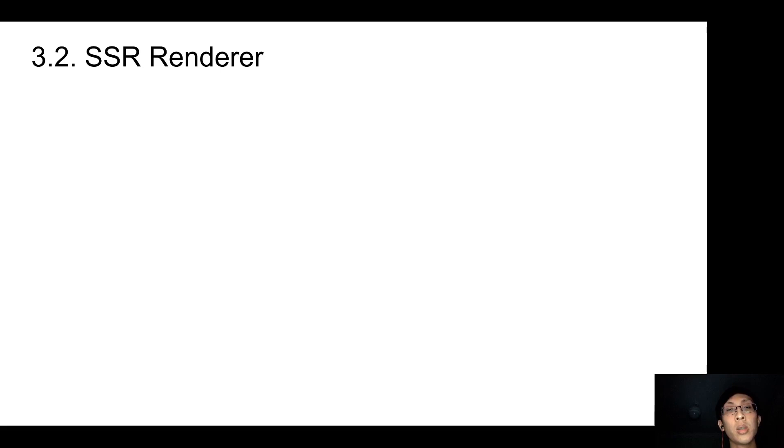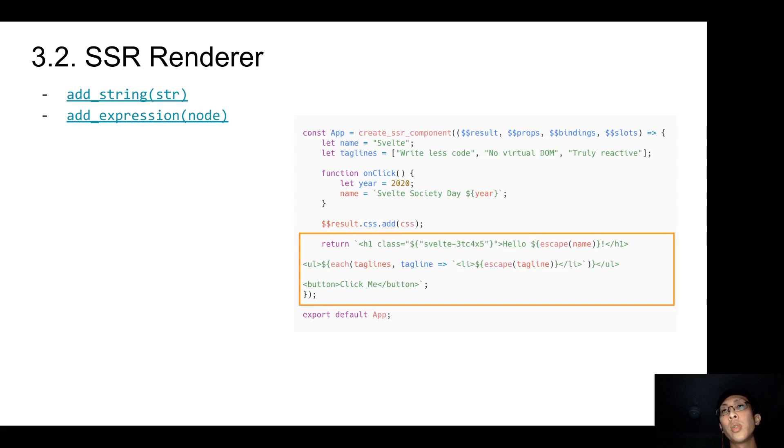Next, we look at the SSR renderer. So here is a typical output of an SSR renderer. If you look at the return statement, you will see a template literal. So the SSR renderer provides helpful functions such as addString and addExpressions. And when it traverses through the template AST, each node will call addString or addExpressions to build out the final template literal.